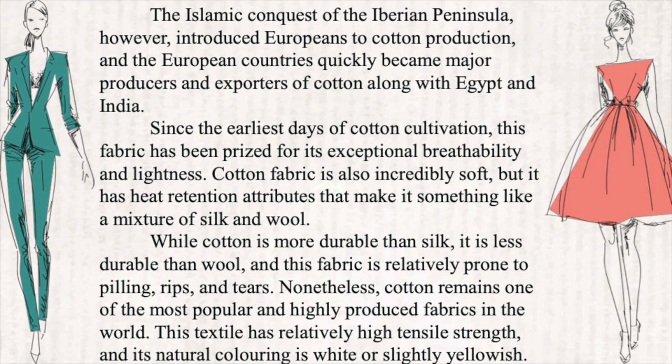Since the earliest days of cotton cultivation, this fabric has been prized for its exceptional breathability and lightness. Cotton fabric is also incredibly soft, but it has heat retention attributes that make it something like a mixture of silk and wool. While cotton is more durable than silk, it is less durable than wool, and this fabric is relatively prone to piling, rips, and tears.